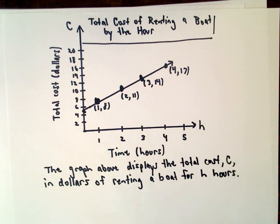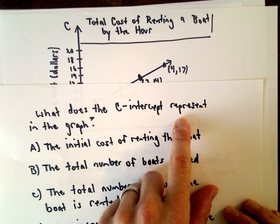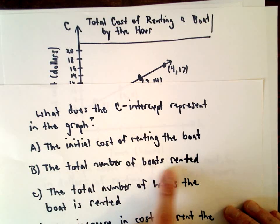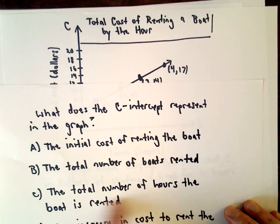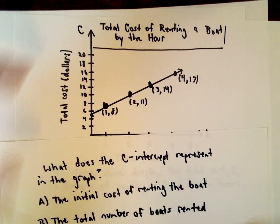Just to give you some more points. So the first question here is: what does the C-intercept represent in the graph? Is it the initial cost of renting the boat, the total number of boats rented, the total number of hours the boat is rented, or the increase in cost to rent the boat for each additional hour?